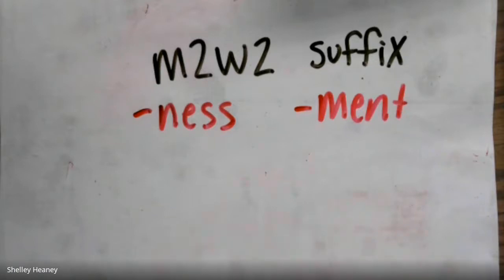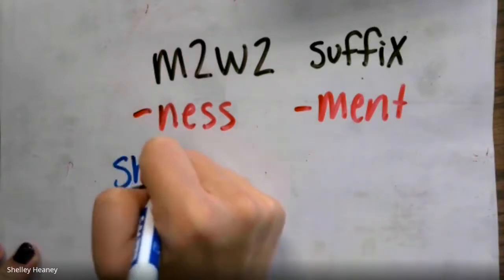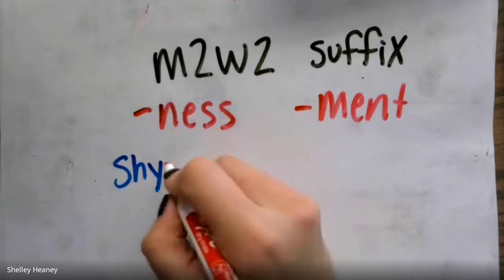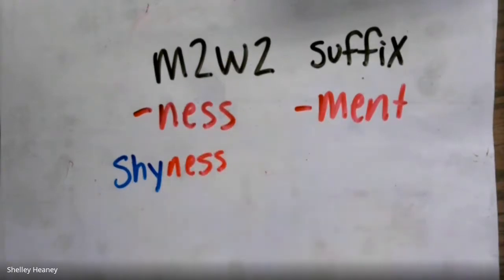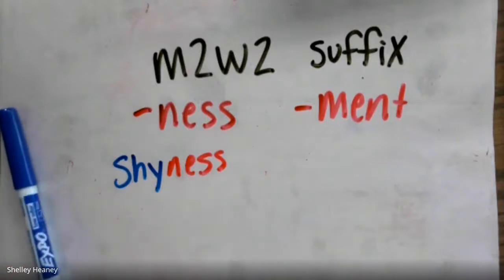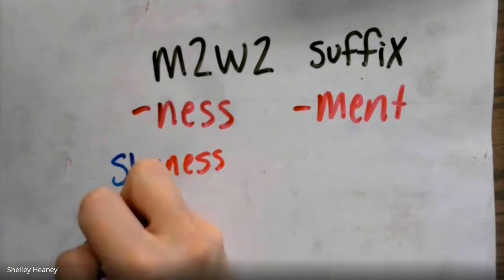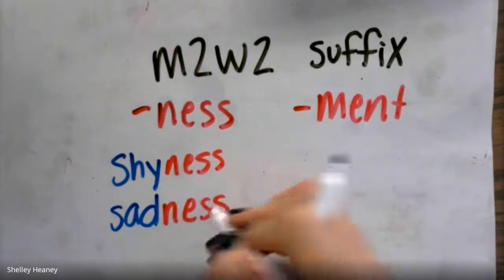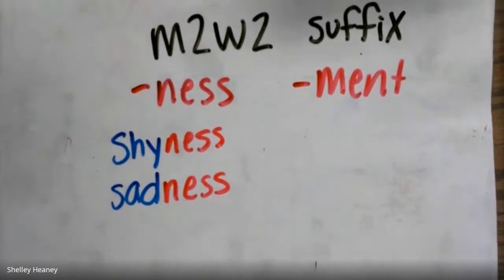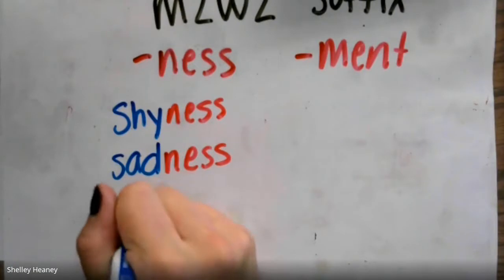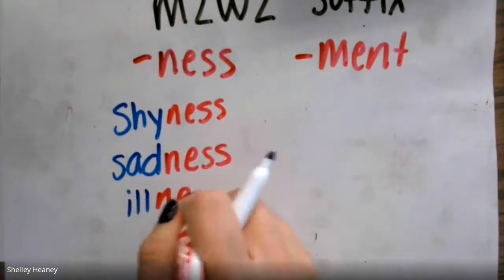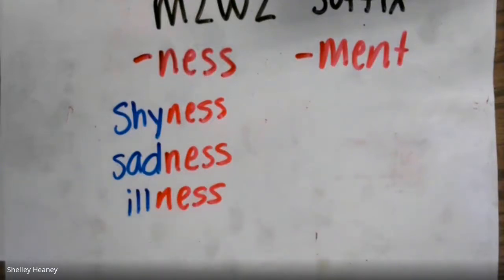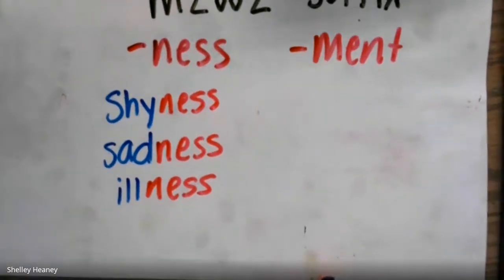For example, if I have the base word 'shy' and I add the suffix -ness, 'shyness' means that you are in a state of being shy. If I have the base word 'bad' and I add the suffix -ness, 'badness' means that you are in a state of being bad. If I have the base word 'ill' and I add the suffix -ness, 'illness' means the state of being ill or sick.